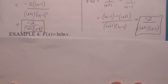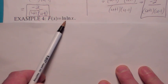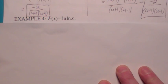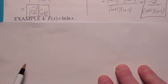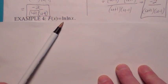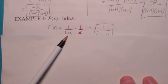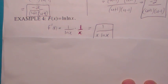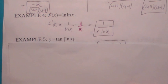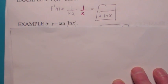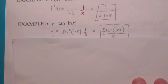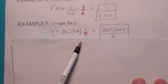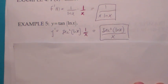How about this one? It starts off 1 over the natural log of x, but then you have to multiply it times the derivative of what's inside. The derivative of the natural log of x is 1 over x, so there's your answer. How about this one? Suppose y equals the tangent of the natural log of x. This is the tangent of something, so when you take the derivative, the derivative of tangent is secant squared of the natural log. Then when you take the derivative of what's inside, you get 1 over x. So there's your answer: secant squared of natural log of x, all over x.